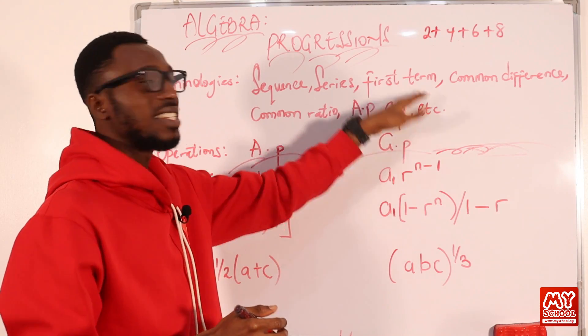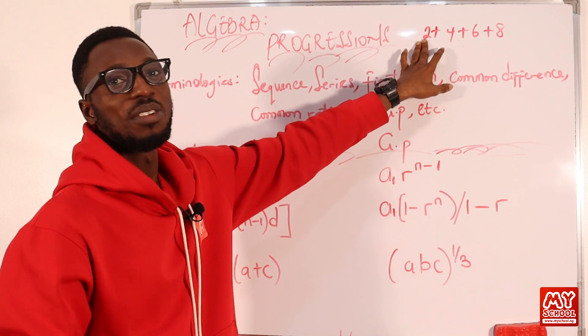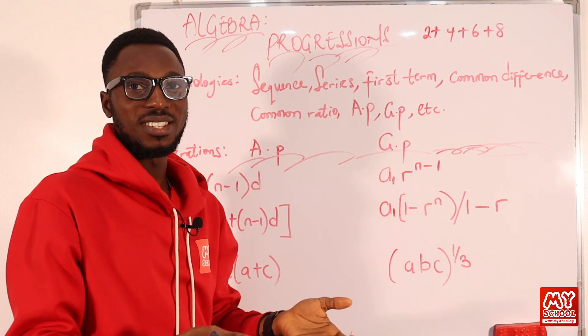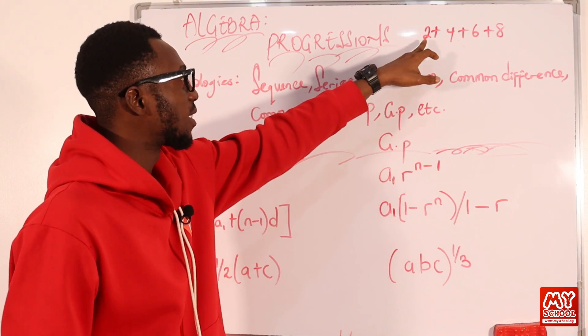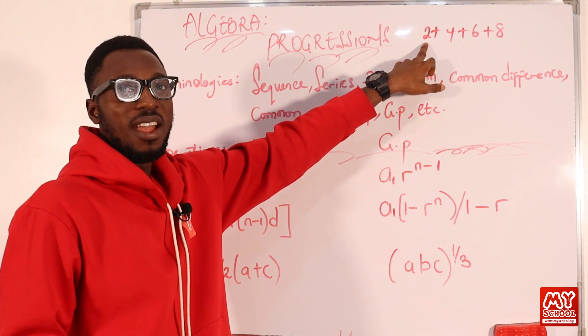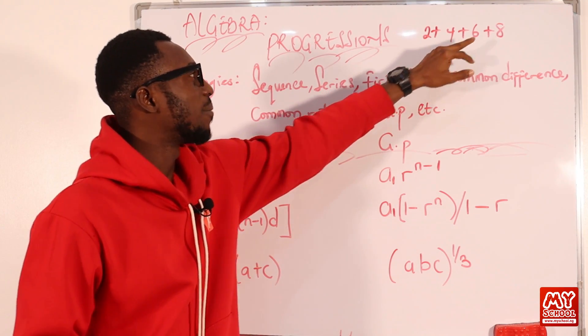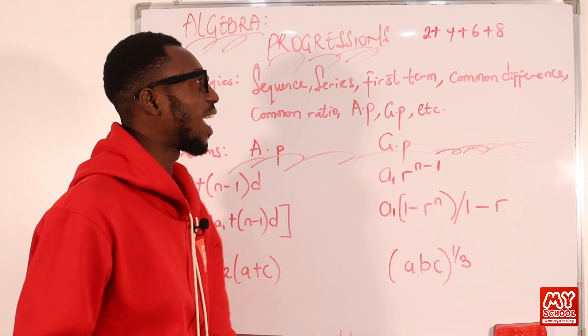We have the first term. The first term is actually the first number or the first item in a particular sequence or arrangement. So in the sequence 2, 4, 6, 8 — 2 is the first term, 4 is the second term, 6 is the third term, and 8 is the fourth term.